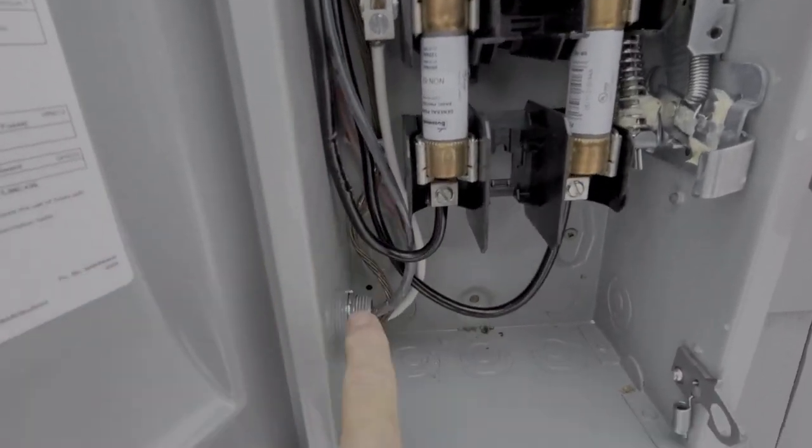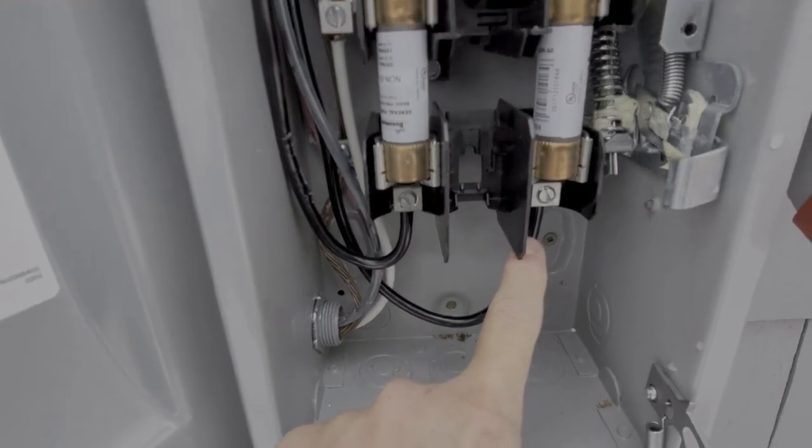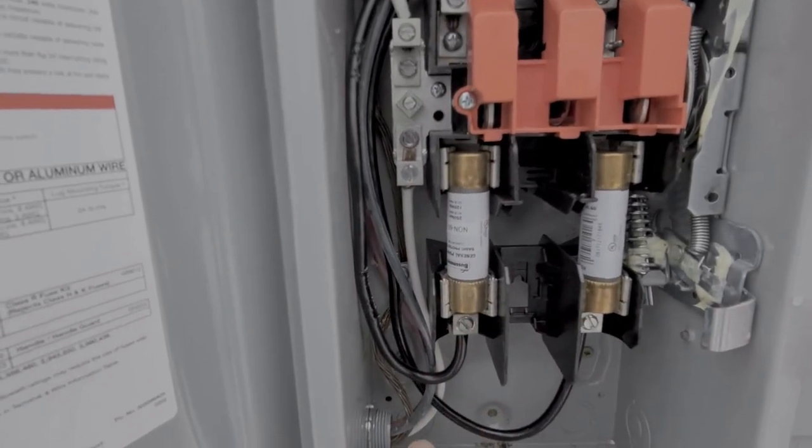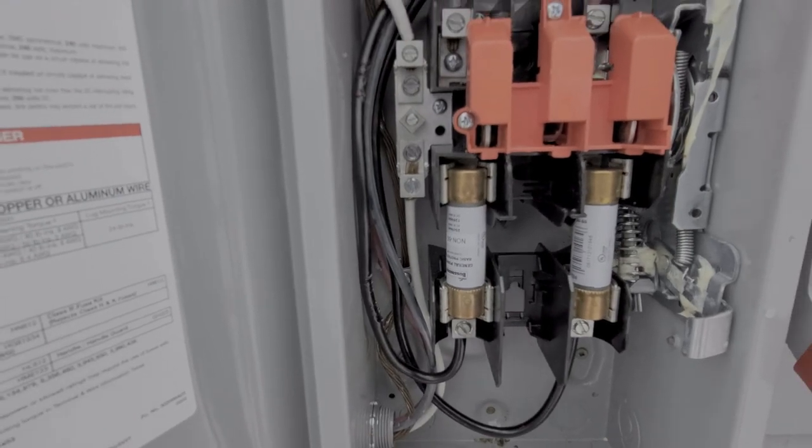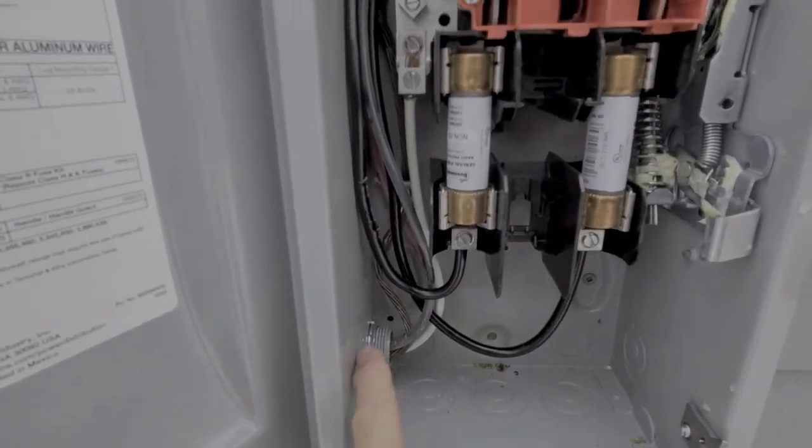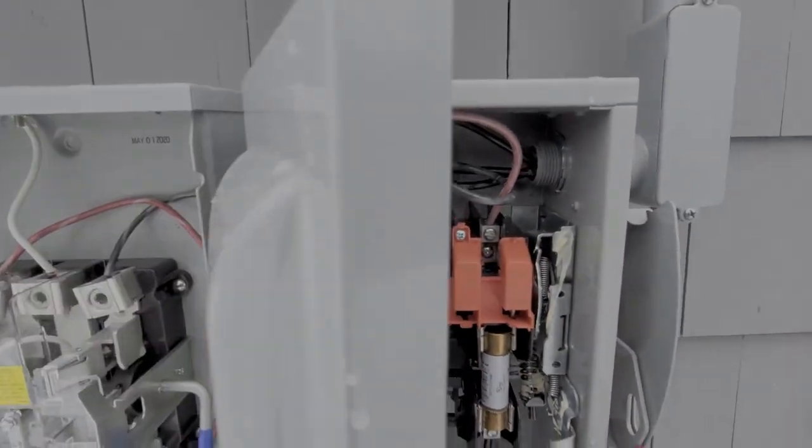So make sure when you run this, solar power goes in the bottom, the grid goes in the top on a fused disconnect.